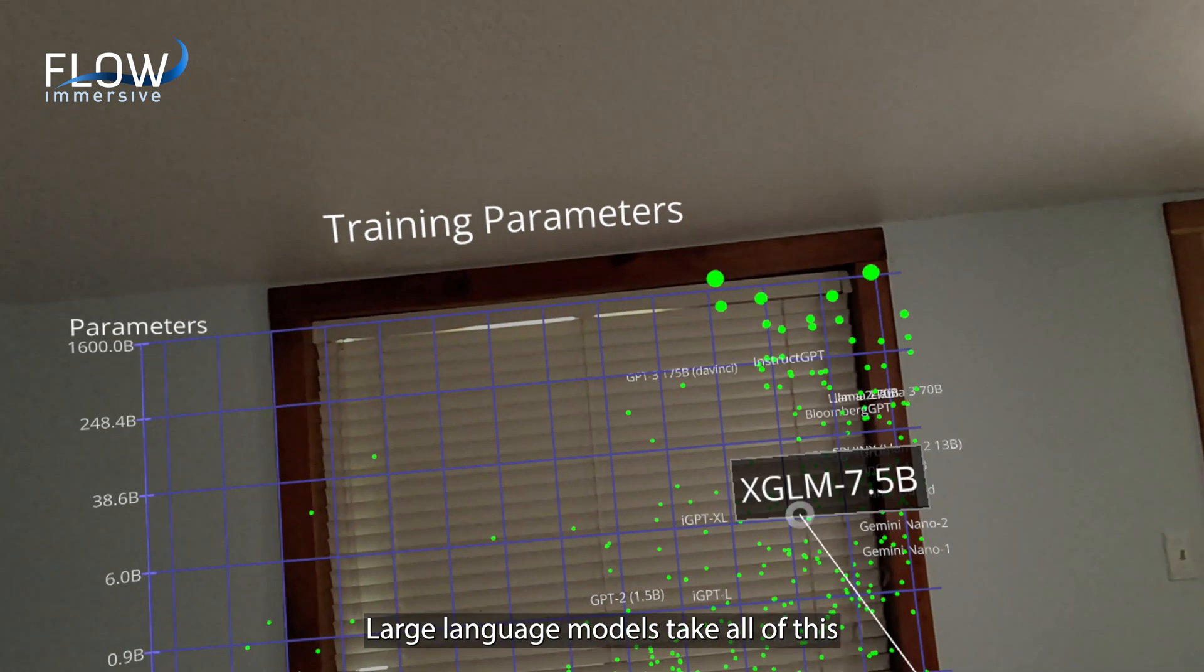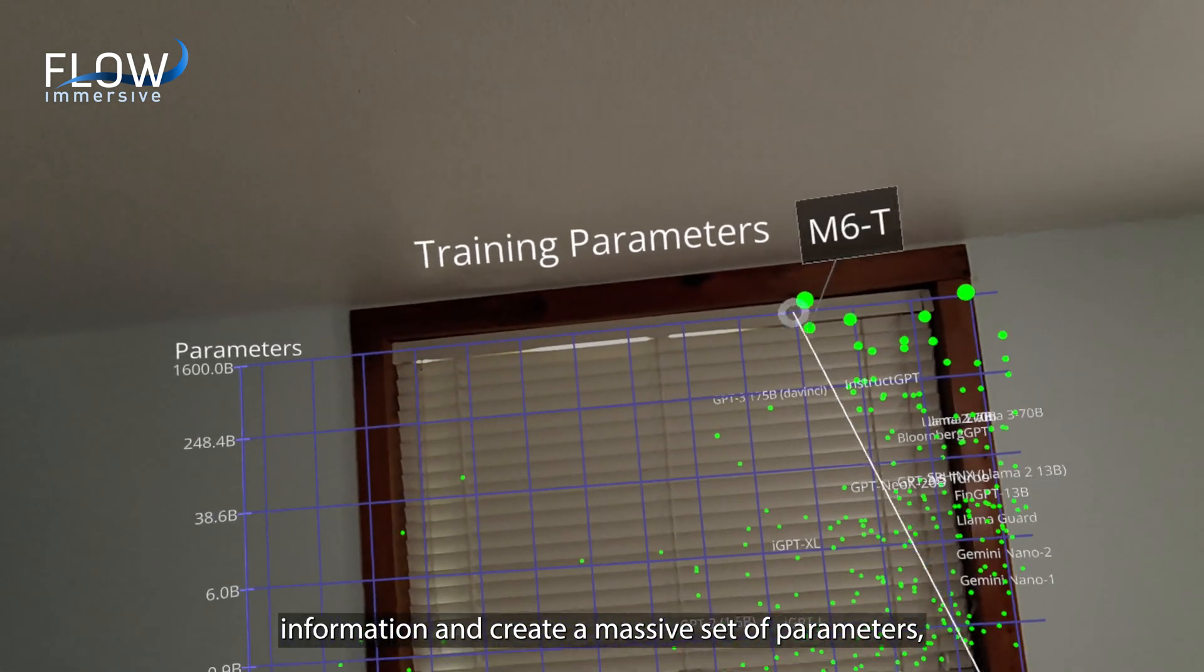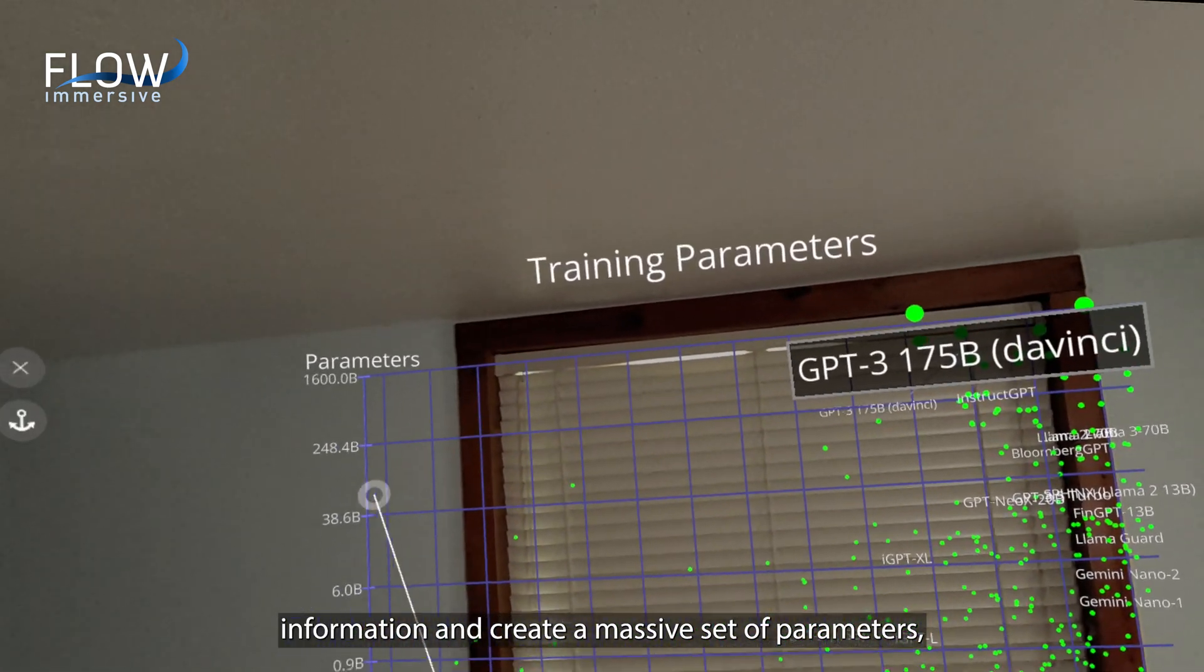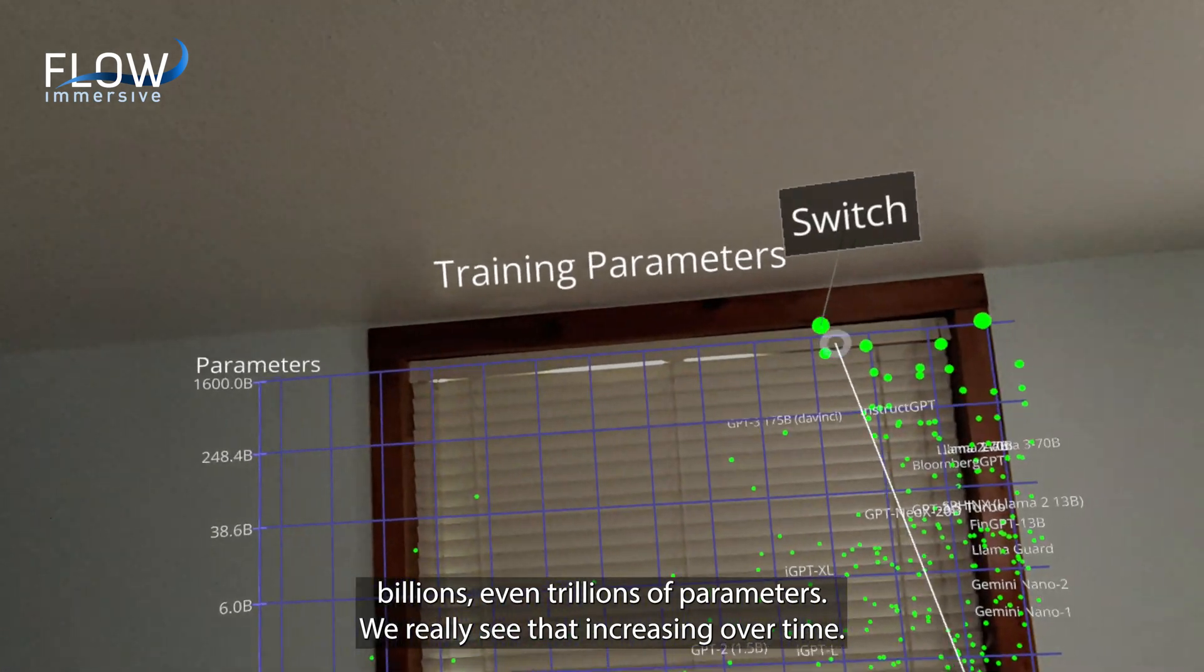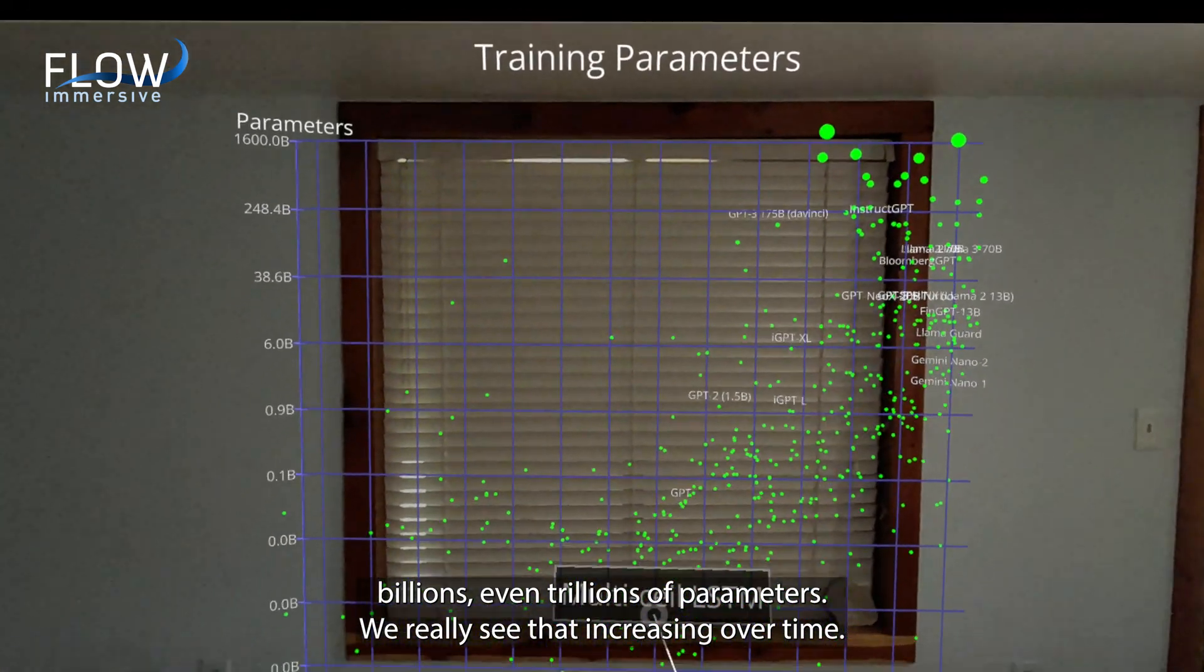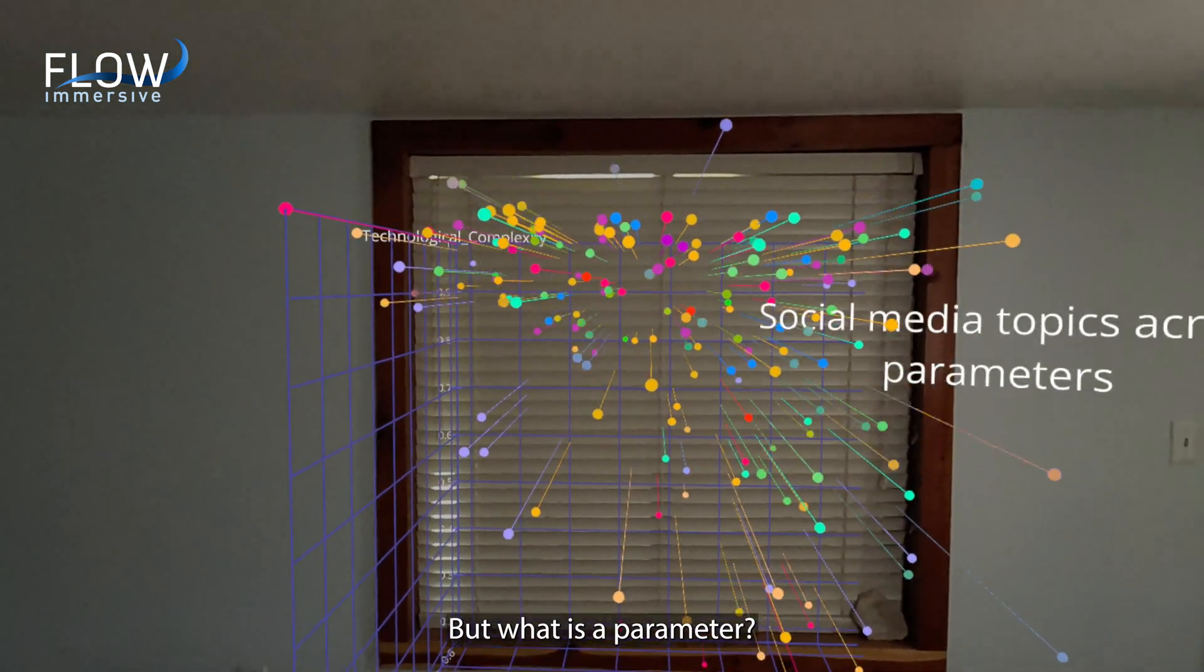Large language models take all of this information and create a massive set of parameters, billions, even trillions of parameters. You really see that increasing over time. But what is a parameter?